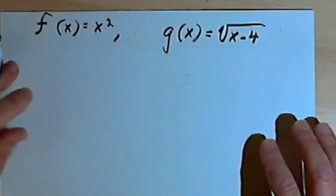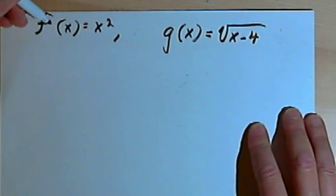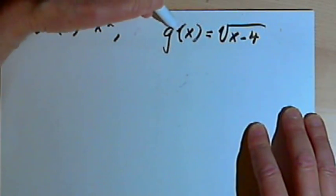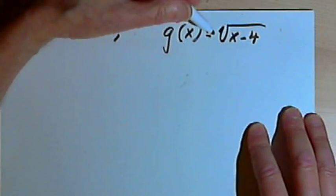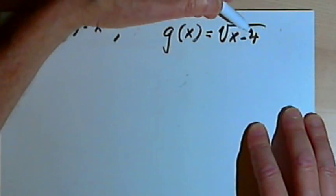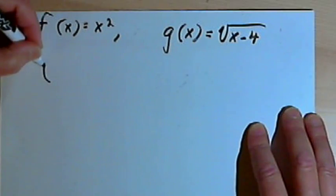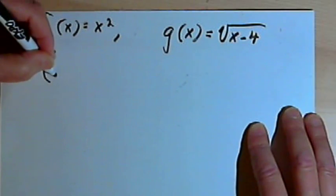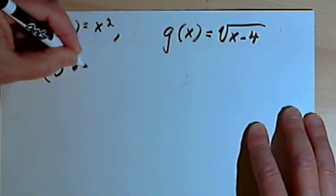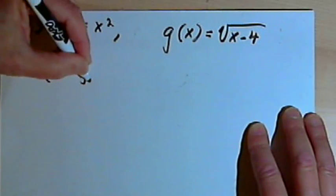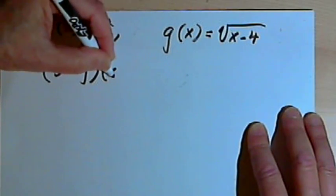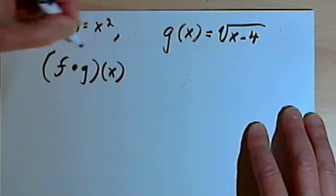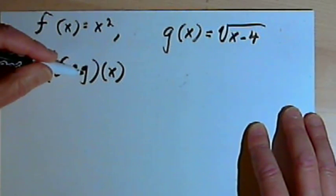Here's the first example. I've got these two functions: f(x) equals x squared and g(x) equals the square root of x minus 4. And I'm told to find f compose g of x and state the domain of that composition.